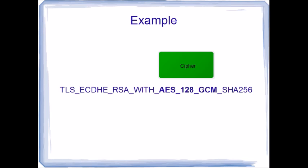This next section represents what algorithms are going to be used for the cipher portion. This is broken up into three sections: AES is the algorithm, GCM is the mode, and then this number represents the strength of the algorithm.